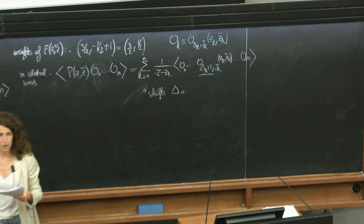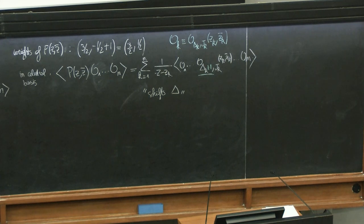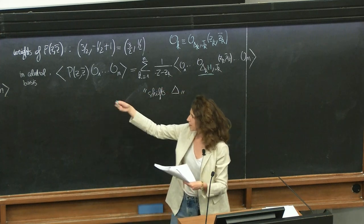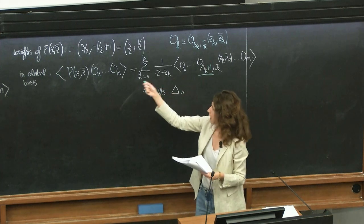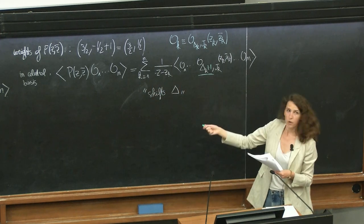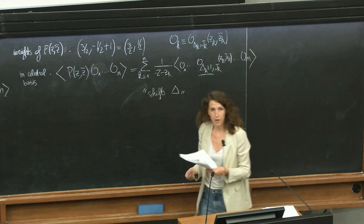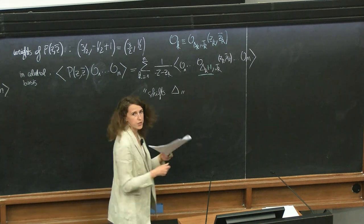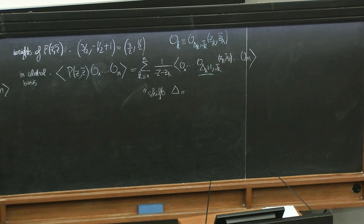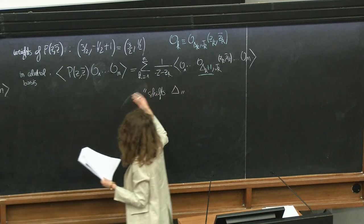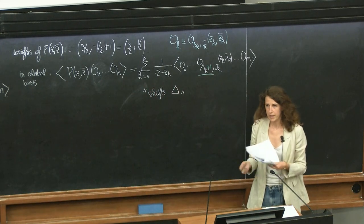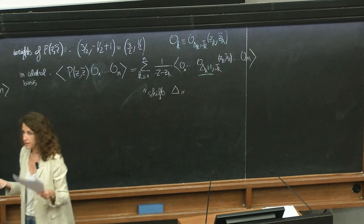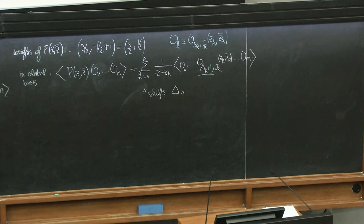So the action of the super-translation current very importantly shifts the conformal dimension of the operator in the celestial CFT — which is again something we don't encounter in vanilla 2D CFT. This is a consequence of super-translation symmetry, and we know this symmetry is there. So whatever is the dual theory of quantum gravity in flat space written in this basis, it will have to obey this infinite amount of relationships implied by super-translation symmetry. By recasting what we know from the momentum basis to the celestial basis, we already see features appearing in the dual theory telling us how it differs from what we are used to.